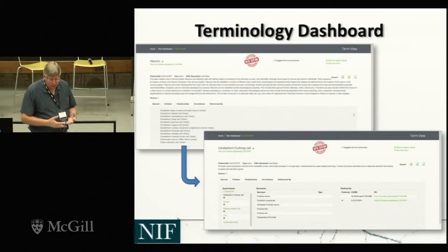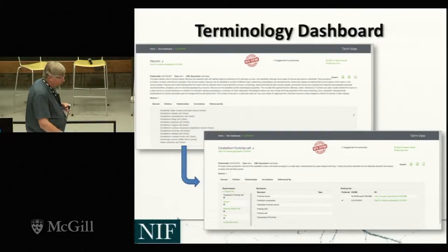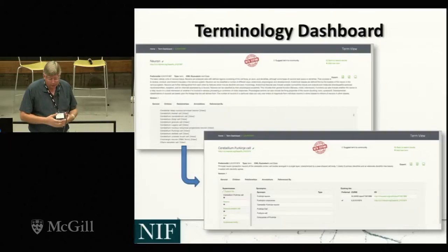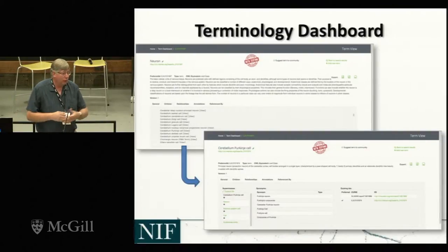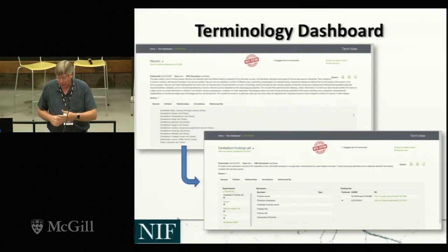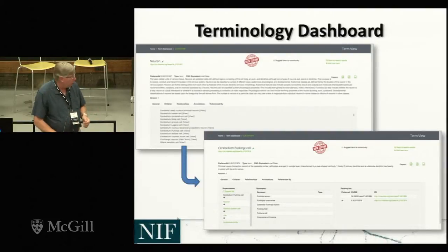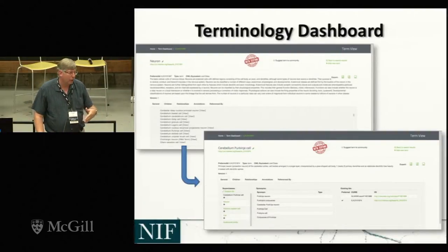Interlex provides a terminology dashboard. You can go in and it provides a user-friendly view of some of the components of the ontology. So if you want to see what children are available for neuron, you can go into Purkinje cell — it provides all the standard information in terms of synonyms, as well as other identifiers from other ontologies and vocabularies where this term was found.